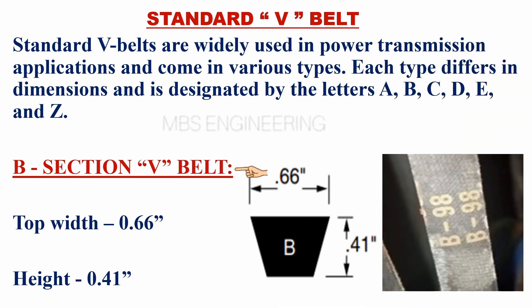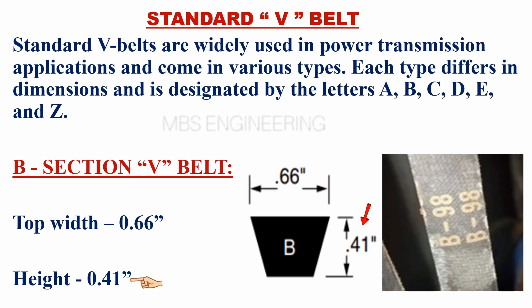The top width of the B-section V-belt is 0.66 inches. The height of the B-section V-belt is 0.41 inches.